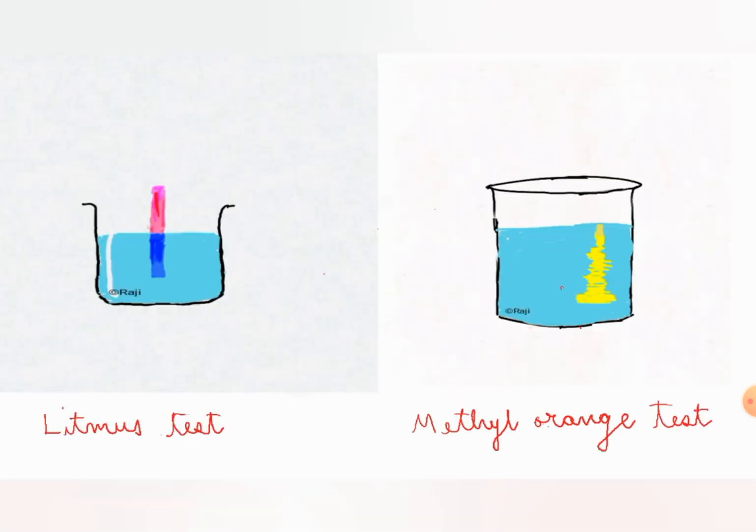Which test you will write for that? This one. This is what we call as a litmus test. If the solution is basic and if you are inserting a red litmus paper into that, it will be turning blue.